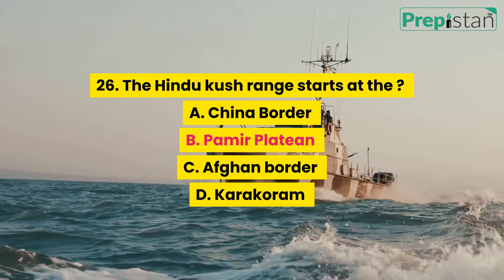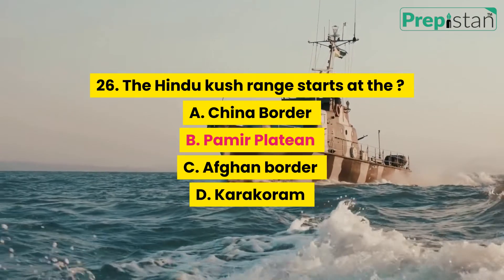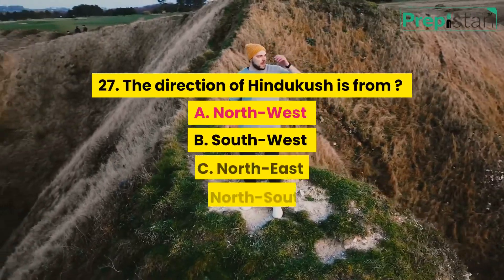Question 26: The Hindu Kush range starts at the: A. China Border, B. Pamir Plateau, C. Afghan Border, D. Karakoram.